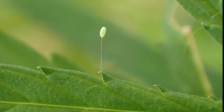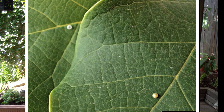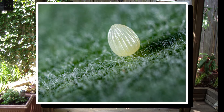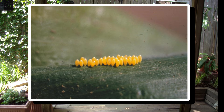A lacewing mama will lay up to 200 oval shaped cream colored eggs on the underside of a leaf, each egg on a thin filament — they almost look like they're floating in air. Remember the monarch eggs under the milkweed leaf? A single tiny white dot stuck firmly to the underside of a leaf. Ladybugs have oval yellow eggs standing upright, stuck by a small end in neat rows.